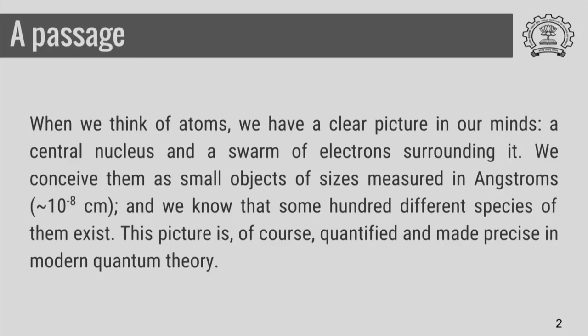So this is a passage. It starts: When we think of atoms, we have a clear picture in our minds, a central nucleus and a swarm of electrons surrounding it. We conceive them as small objects of sizes measured in Angstroms of the order of 10 power minus 8 centimeter, and we know that some hundred different species of them exist. This picture is of course quantified and made precise in modern quantum theory.